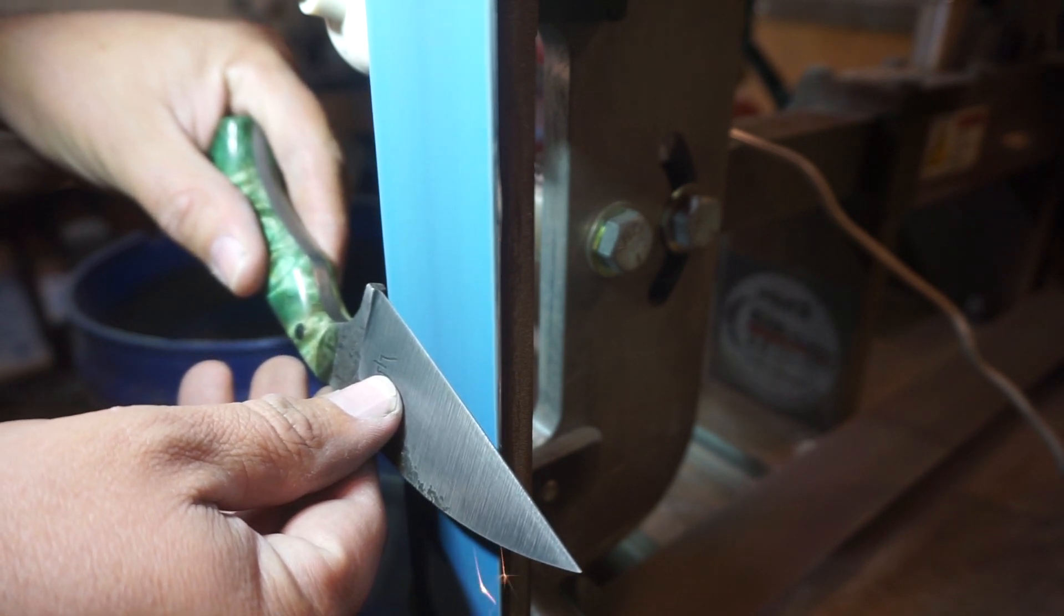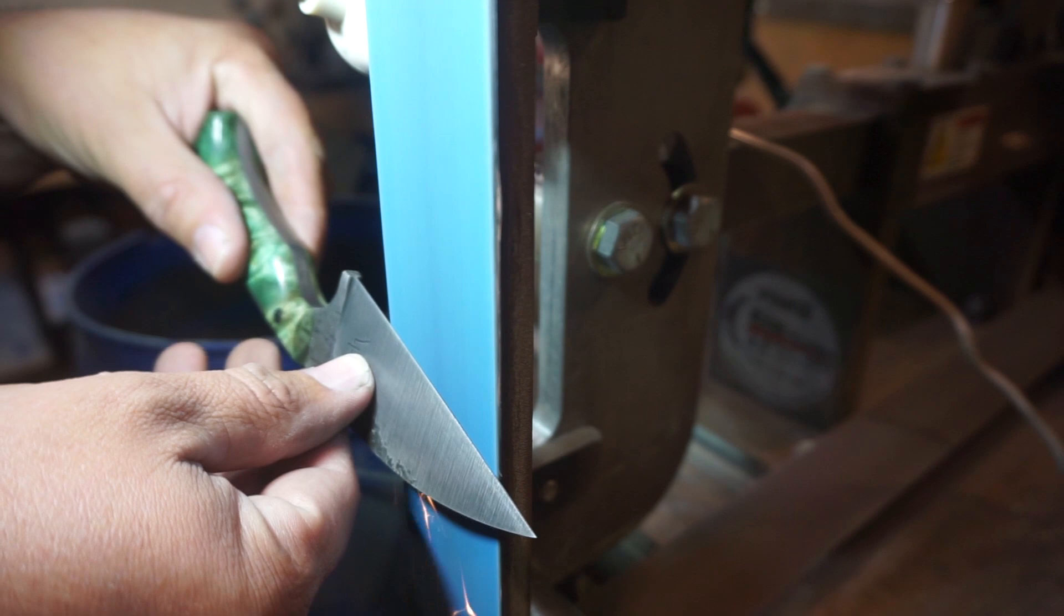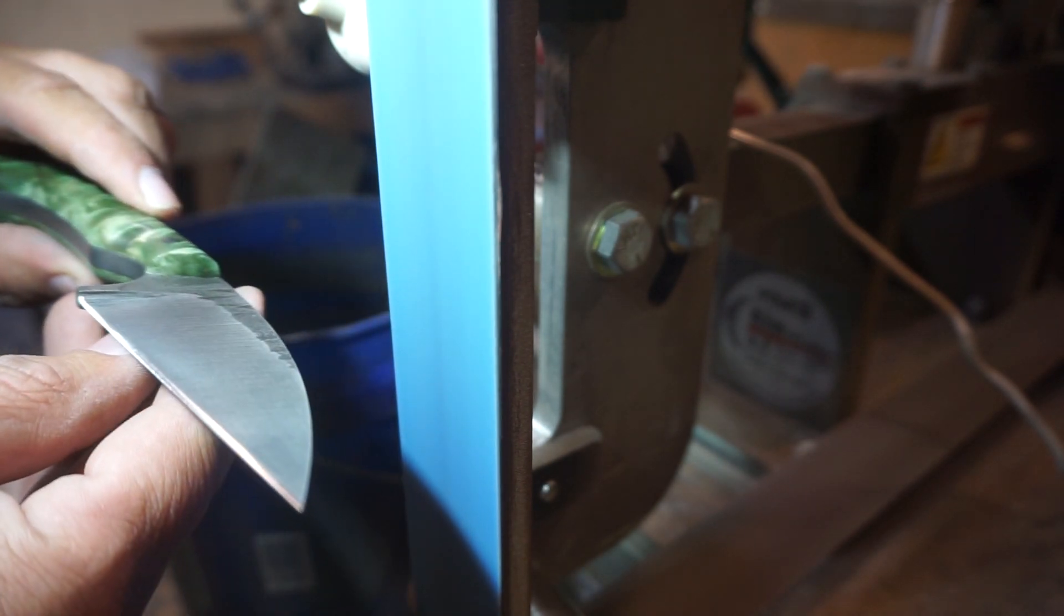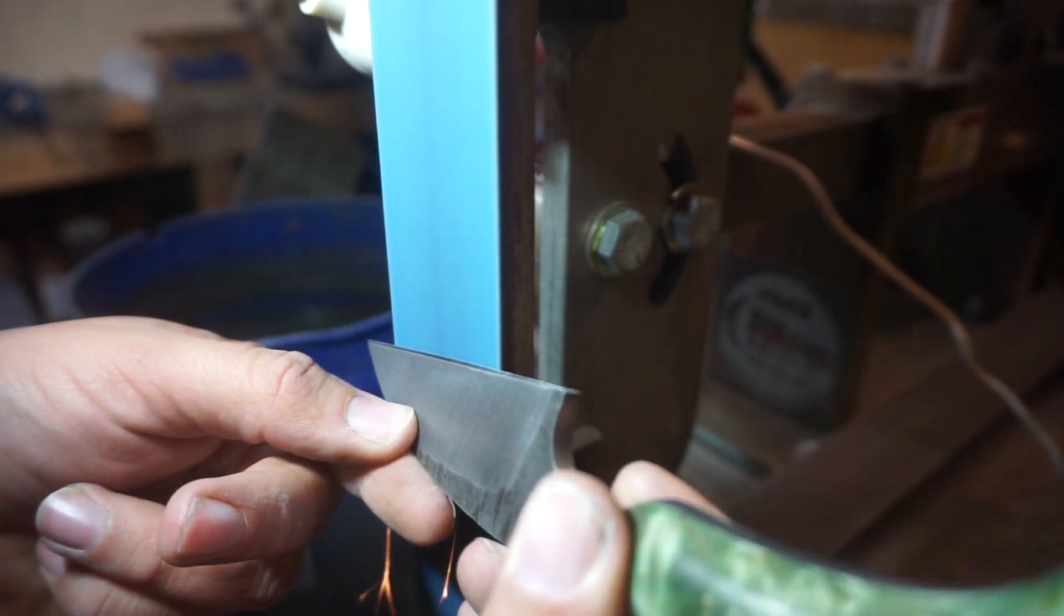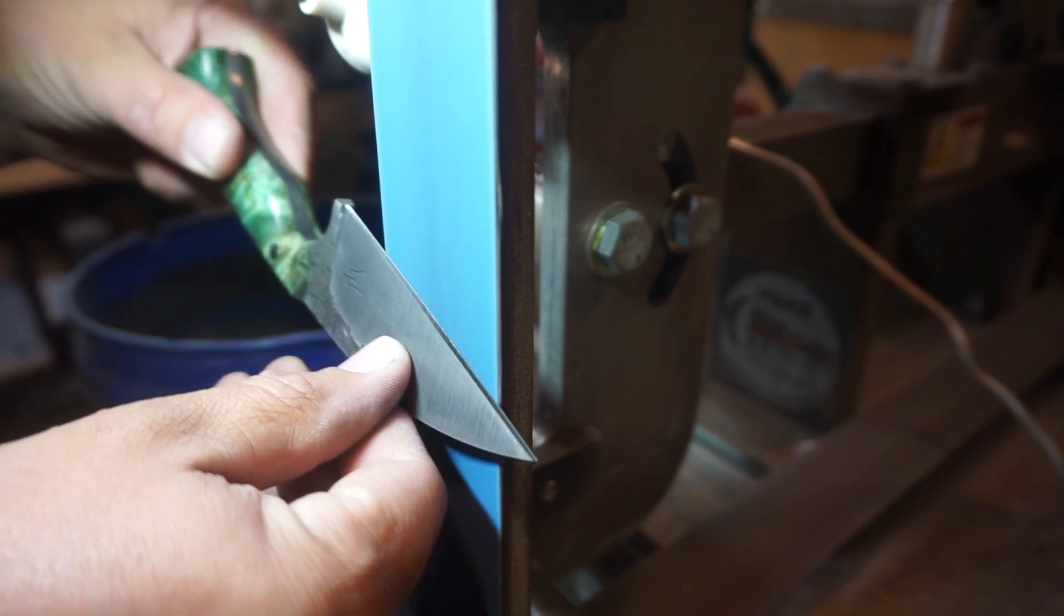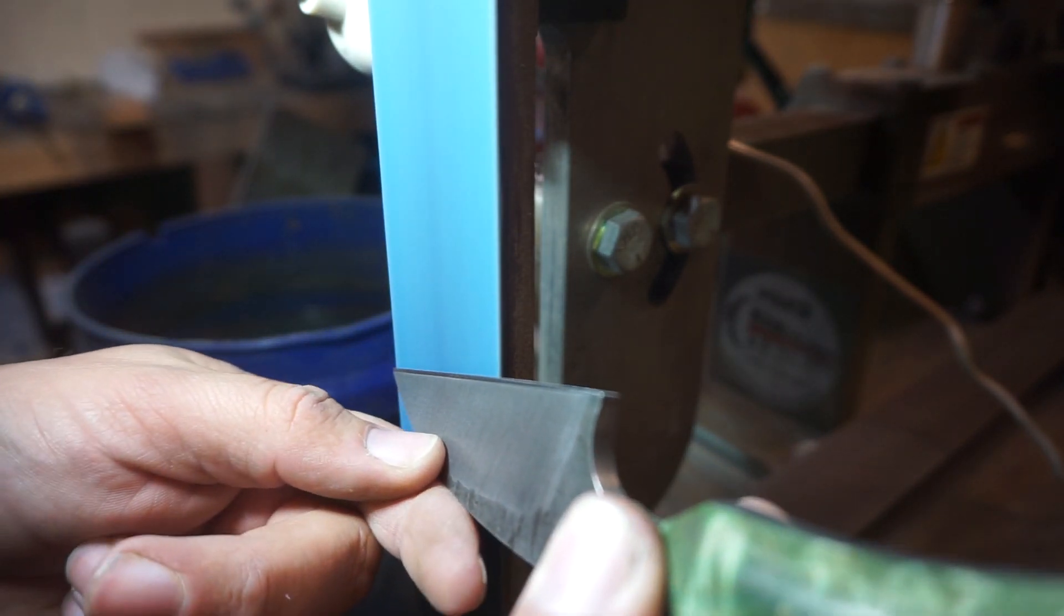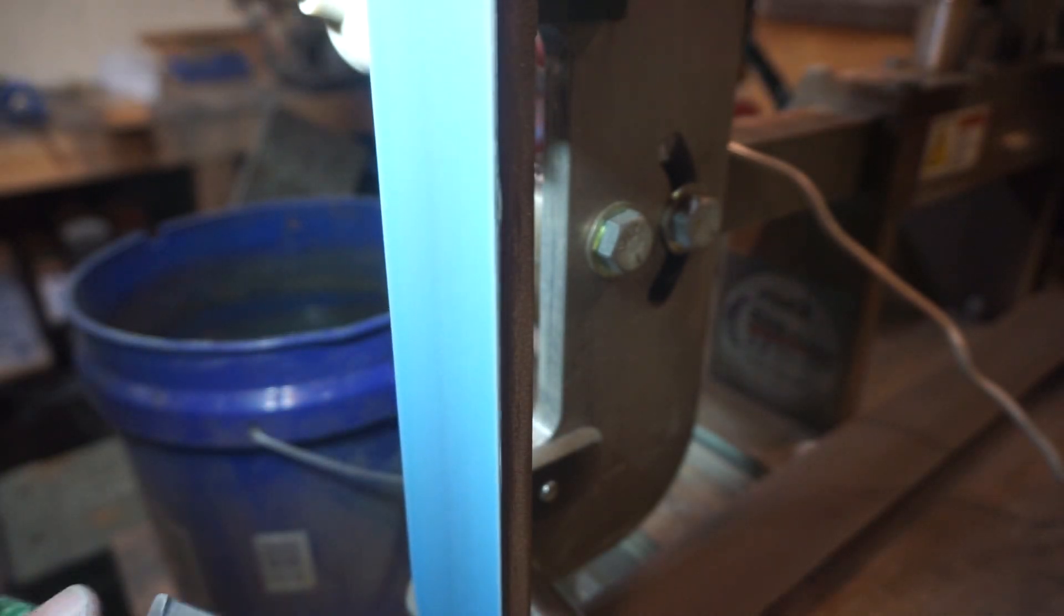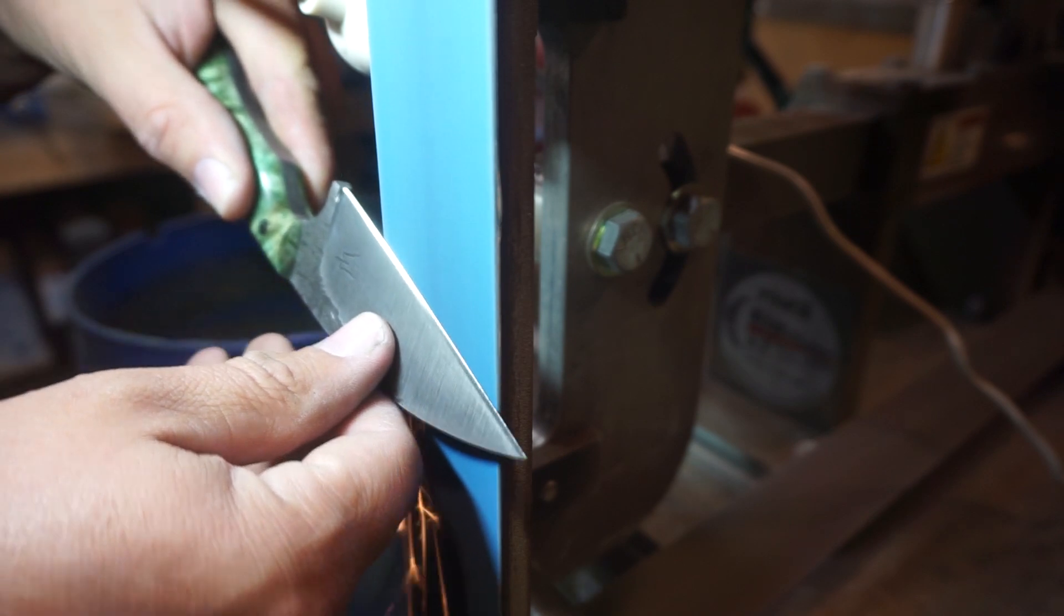Now when it comes to putting an edge on it, I'm using a 400 grit belt on the 2x72 just to set that secondary bevel. We're not really trying to create a burr or anything like that with this belt. It's purely just setting up the secondary bevel so that we can then refine it.